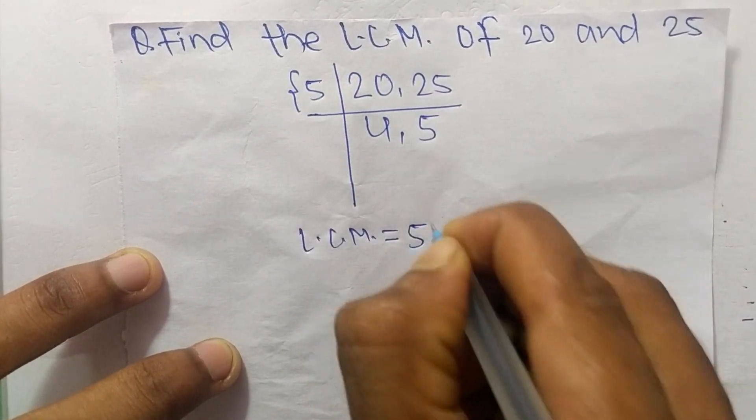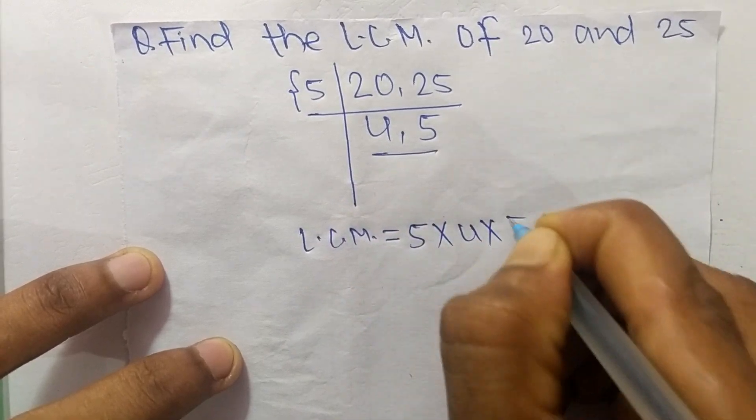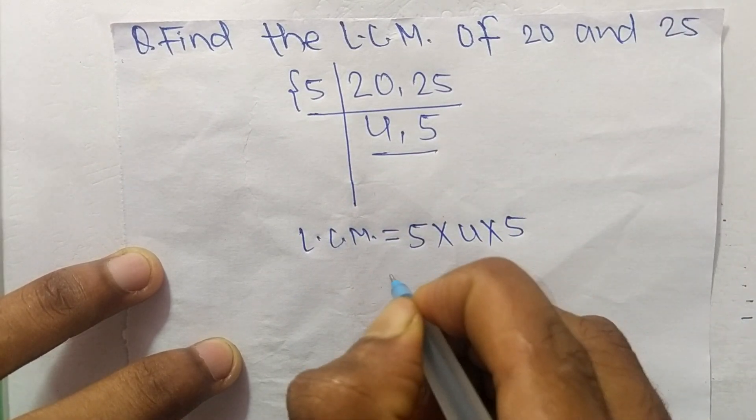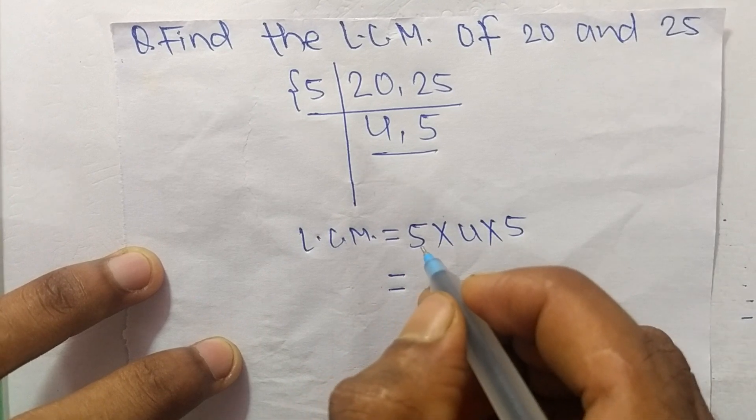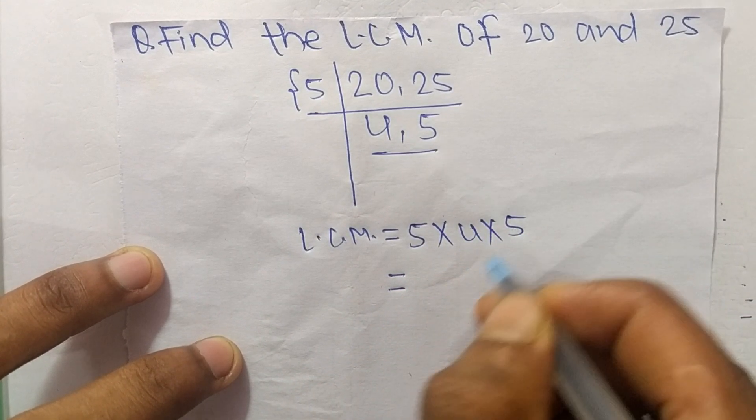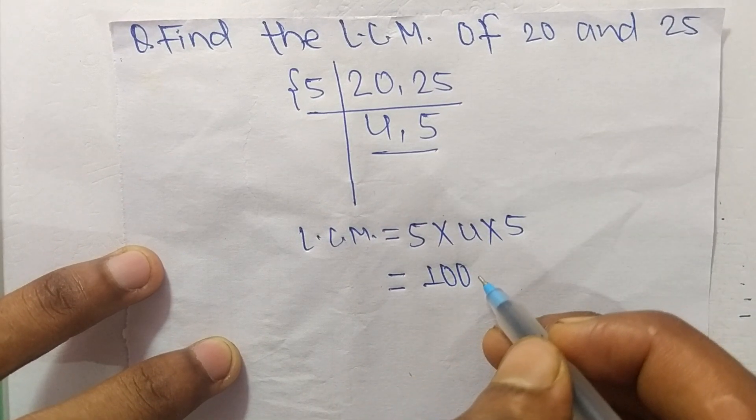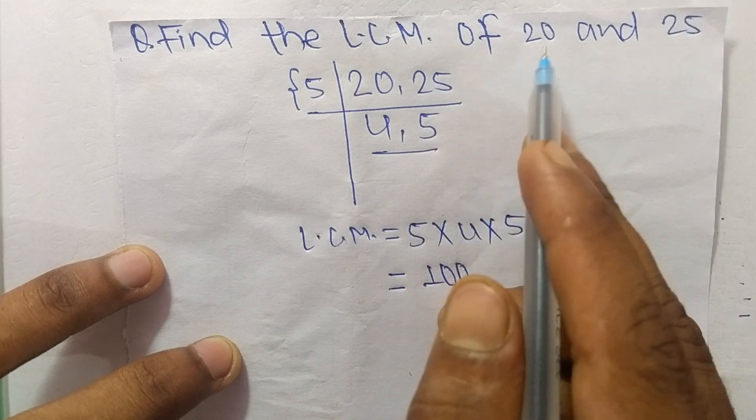The LCM is equal to 5 from this part, and 4 and 5 from this part. So it equals 5 times 4, which is 20, times 5, which means it is 100. So 100 is the LCM of 20 and 25.